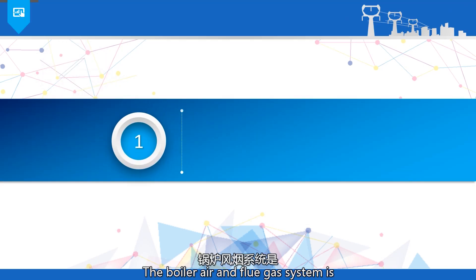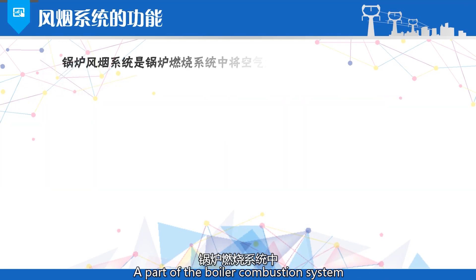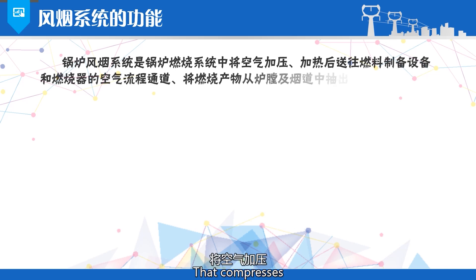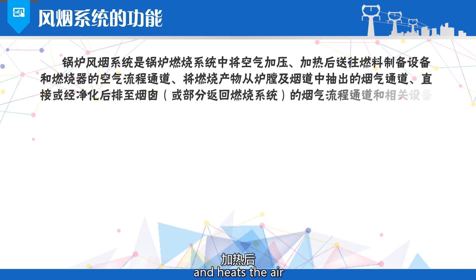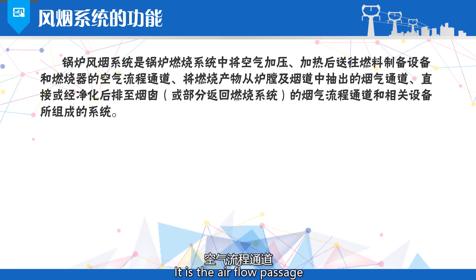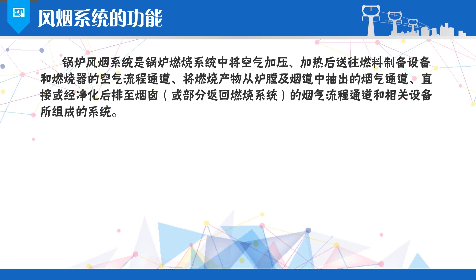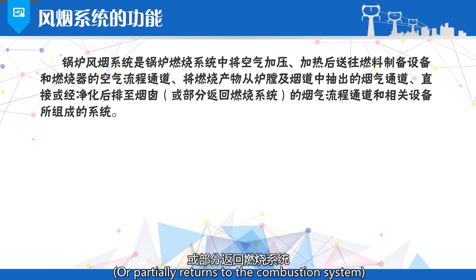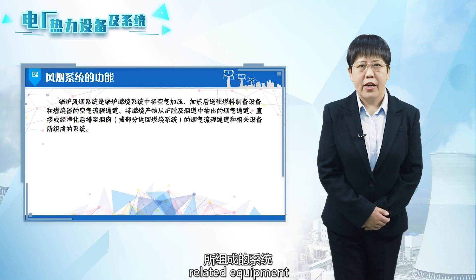The boiler air and flue gas system is a part of the boiler combustion system that compresses and heats the air and then sends it to the fuel preparation equipment. It is the air flow passage that extracts the combustion products from the furnace and the flue and directs the flue gas either directly or after purification to the chimney, or partially returns it to the combustion system. It is a system composed of related equipment.